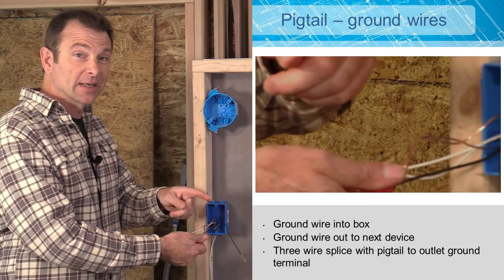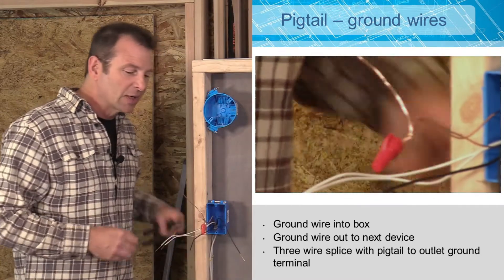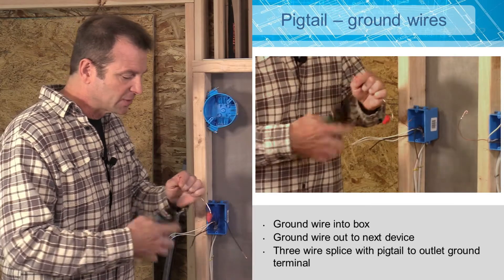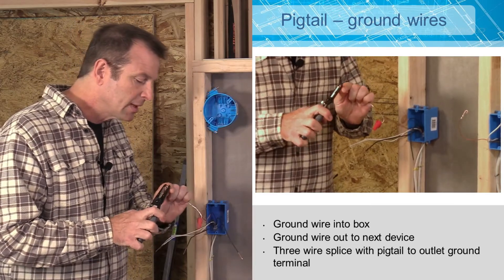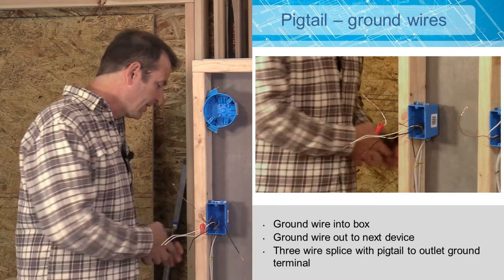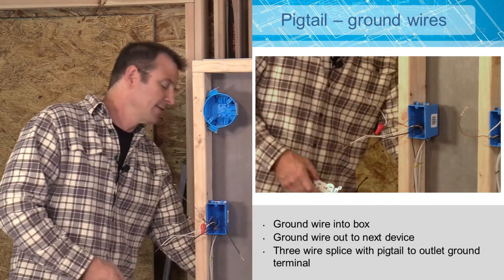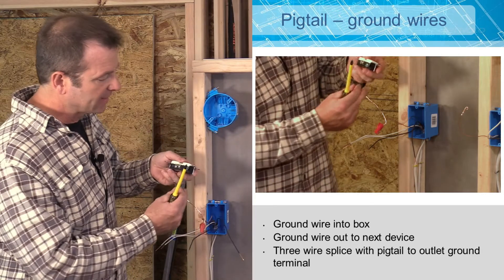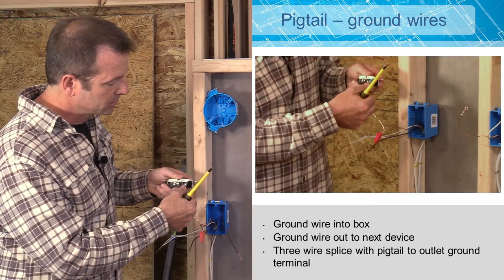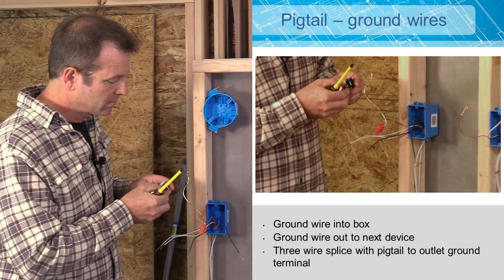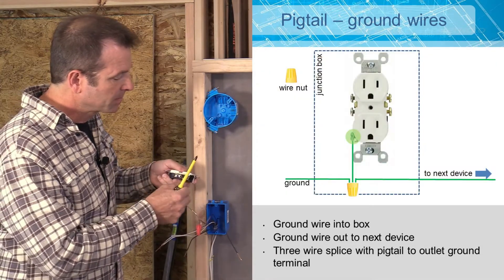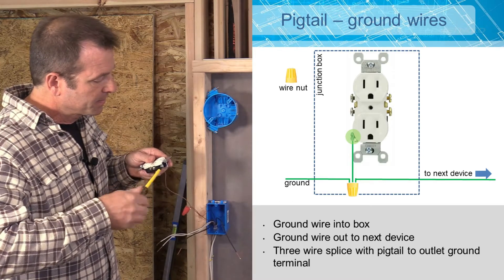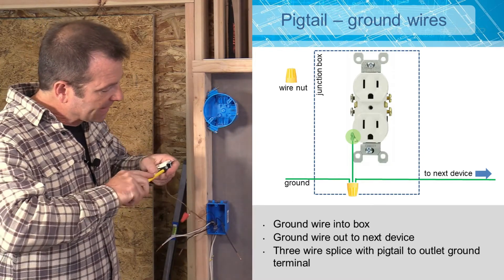This is the wire that I'm going to connect to my terminal. So I can go ahead and make that connection. I'm going to bend a short hook on it on the end. And that one is going to connect to my ground terminal on my outlet. You want that nice and tight.